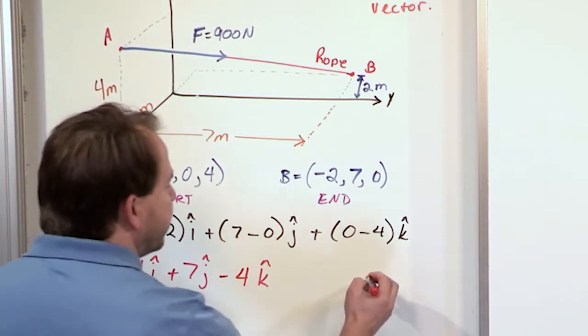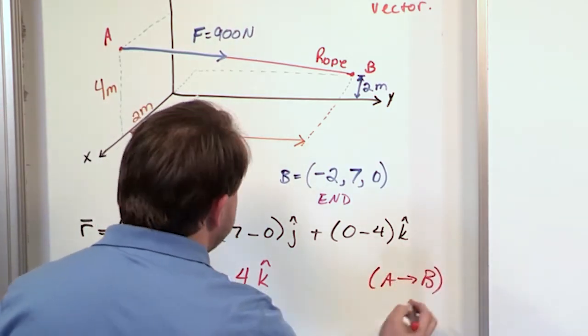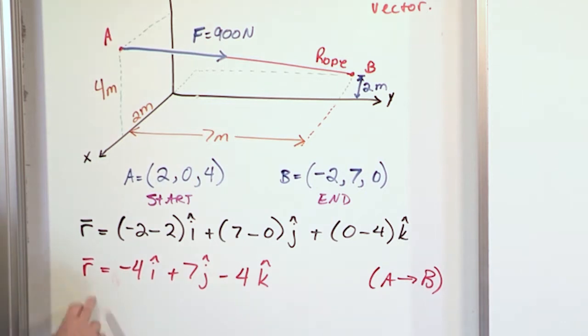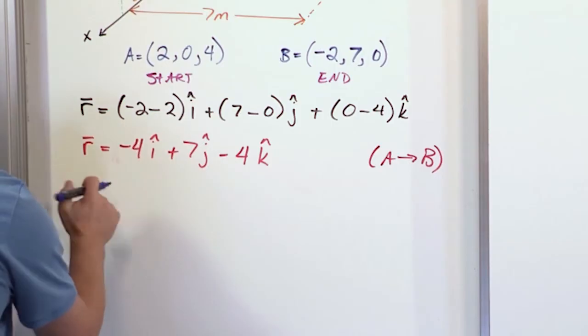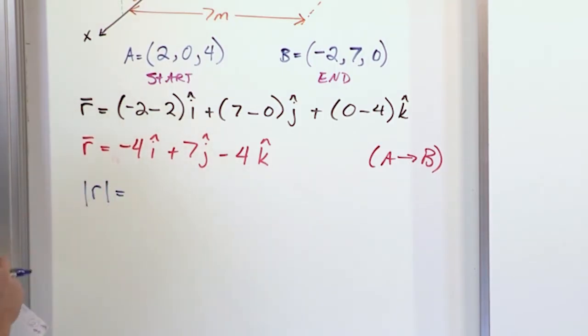So this is the full-blown vector that points from A to B. So I'll just kind of put over here a note. This is from A, point A, to point B. Now, we don't actually use the position vector. We use a unit vector in this direction. So what would be a unit vector in this direction? In order to find that, we need to find what the magnitude of this position vector is.